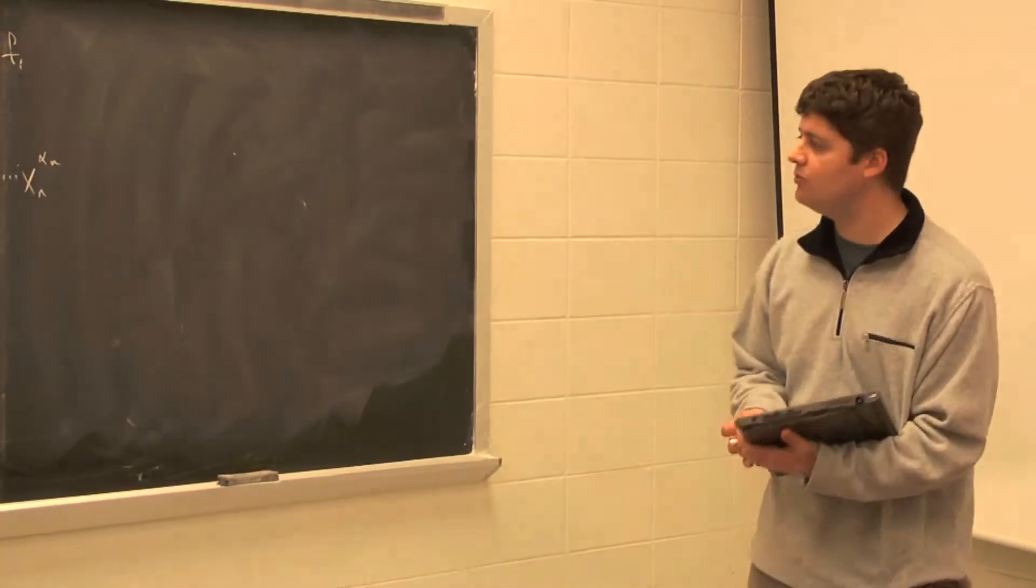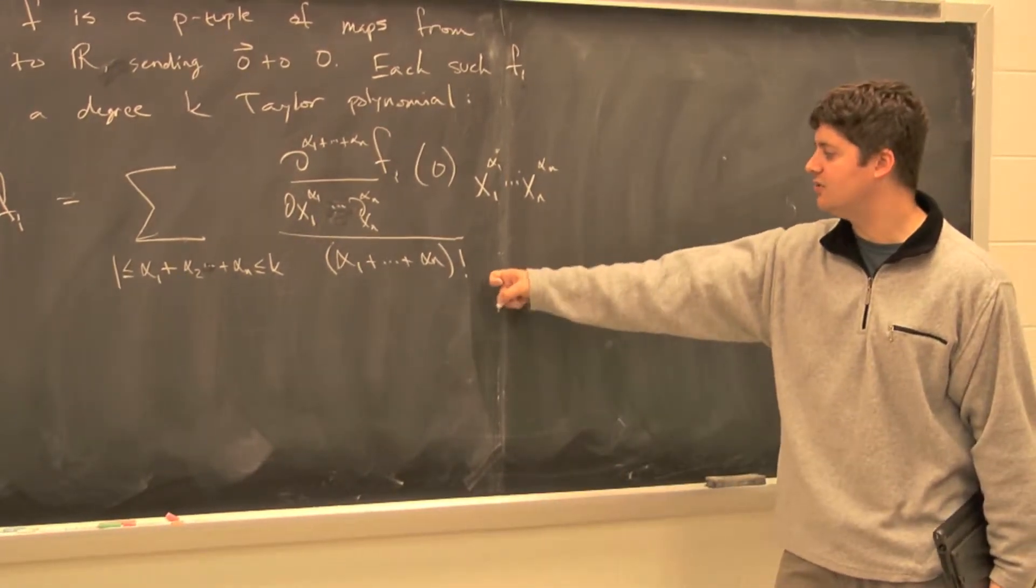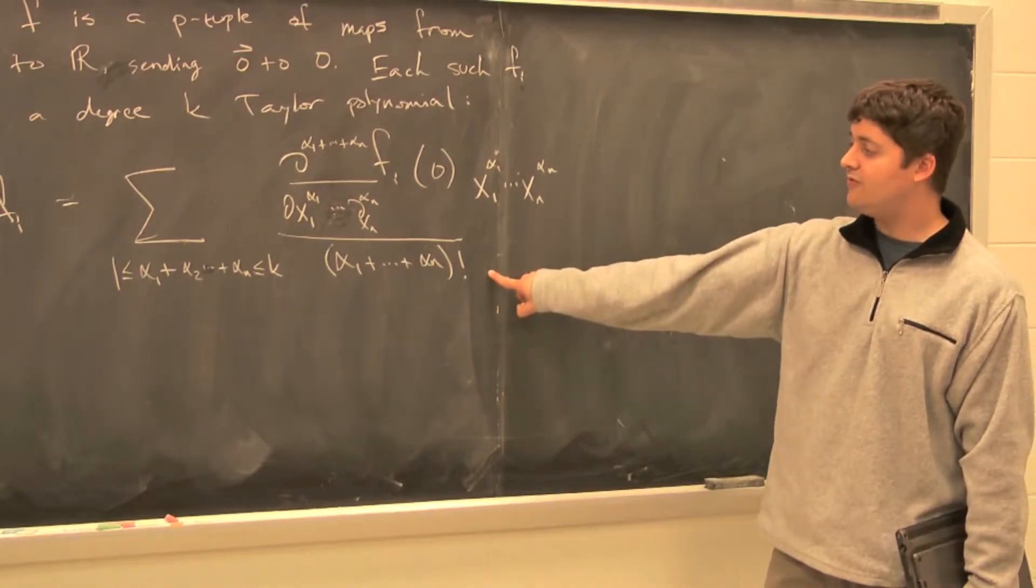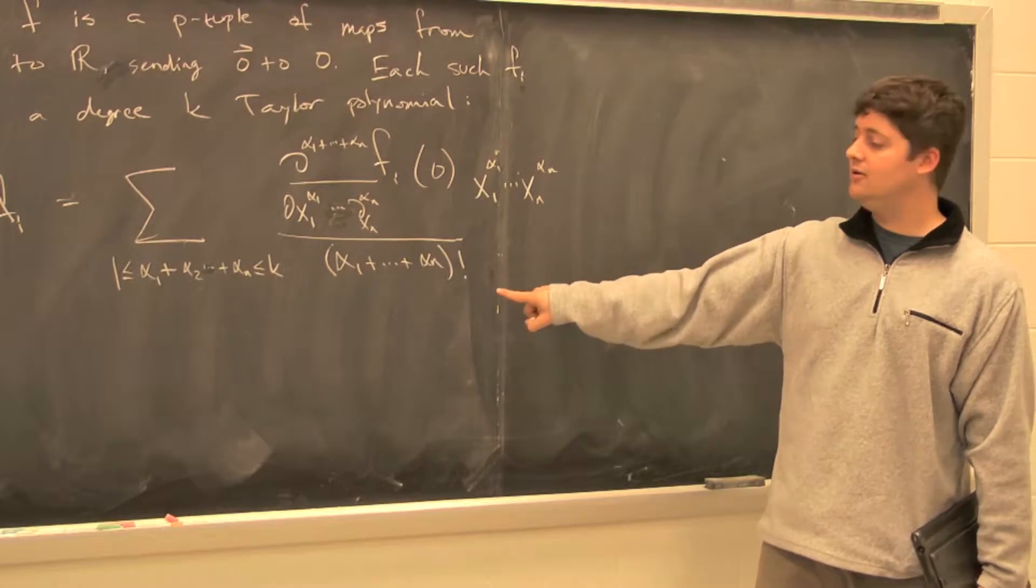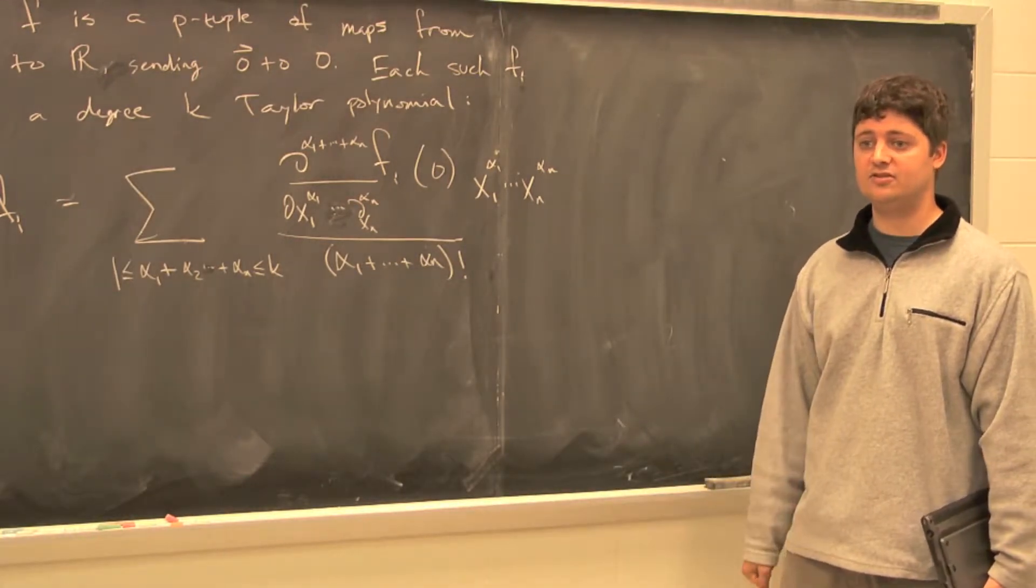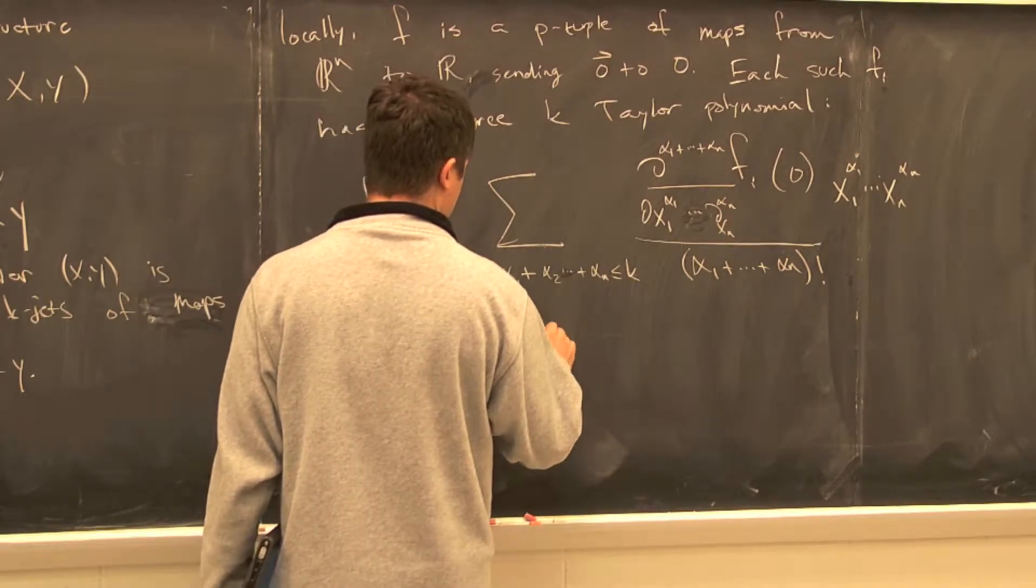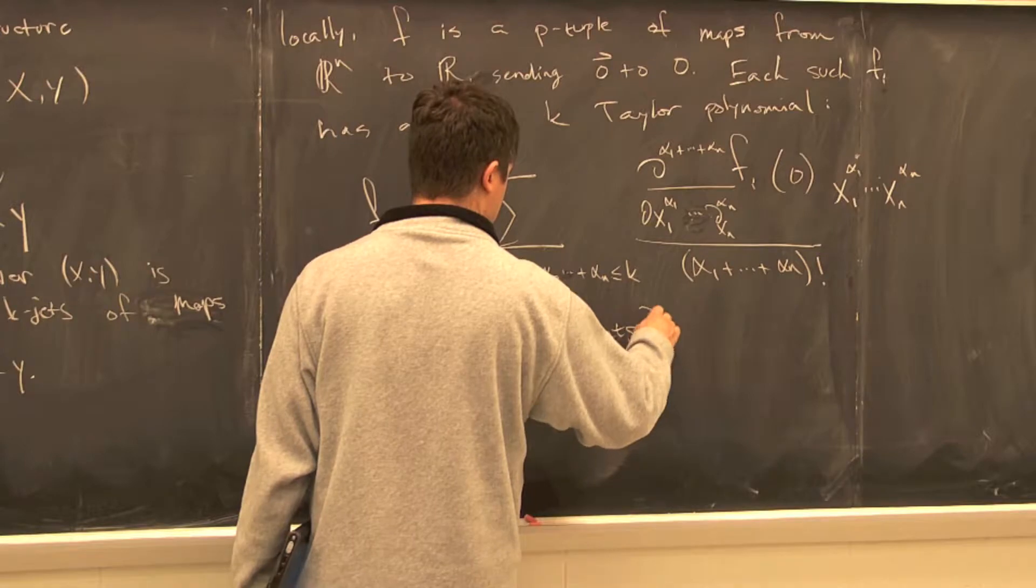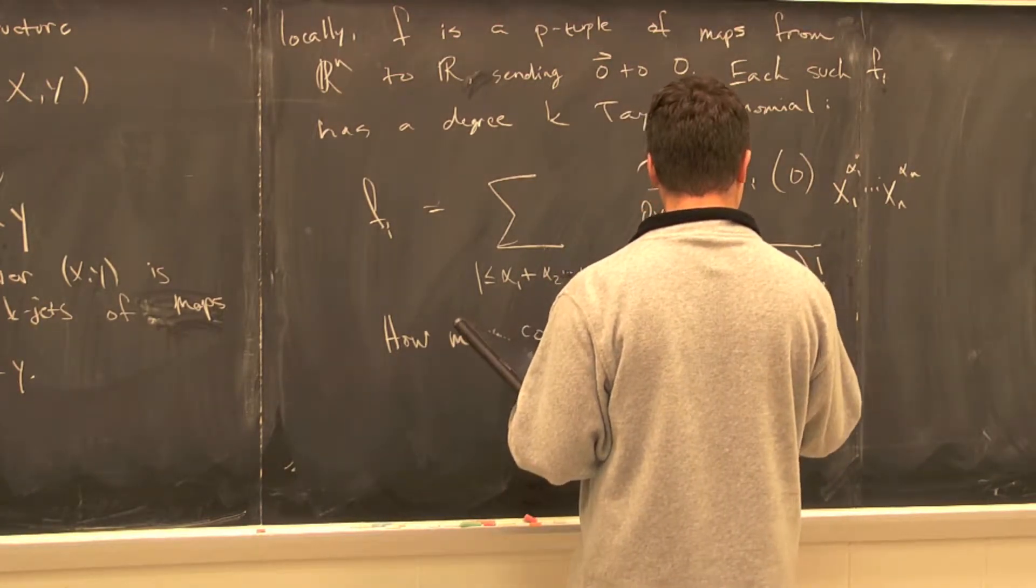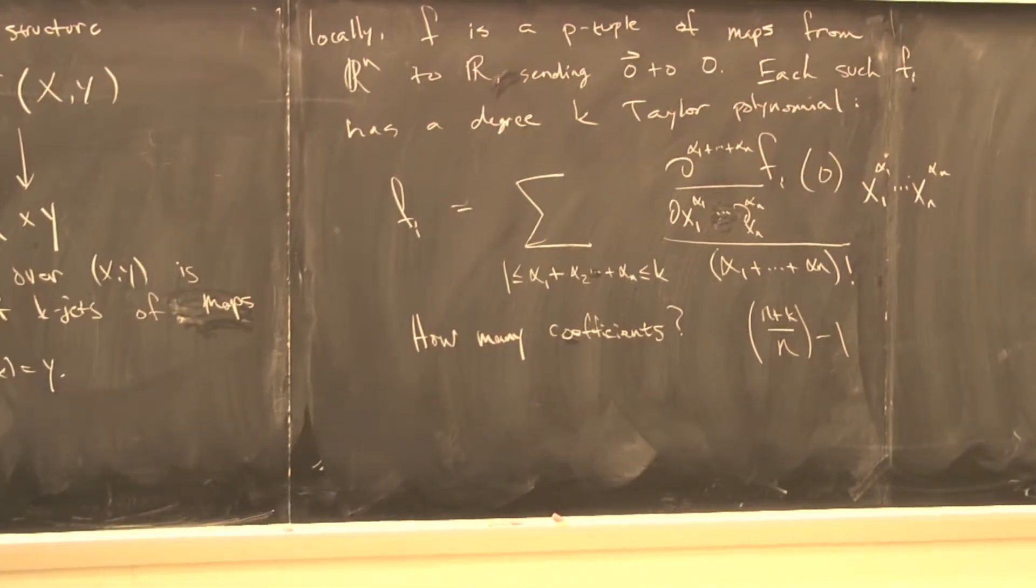Once you've specified such a p-tuple of polynomials, you've specified a k-jet. That's all the k-jet sees—the partial derivatives up to order k. What we see is locally the fiber consists of all such Taylor polynomials. How do you parameterize the collection of these polynomials? Well, you just look at the coefficients. So the question is, how many coefficients are there? It's n+k choose n-1, and I'll call that capital N.